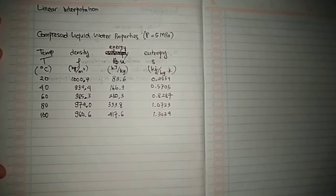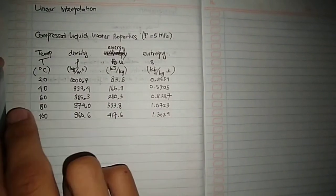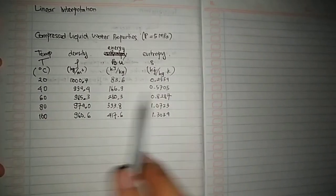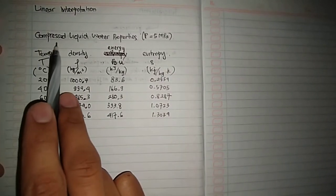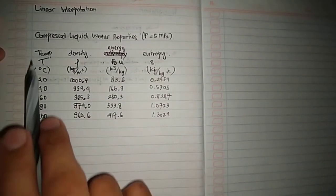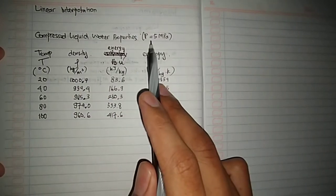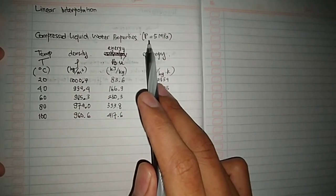We go directly to the example. Let's assume that we have a table like this, and this table expresses the compressed liquid water properties in an environment with pressure of 5 MPa.